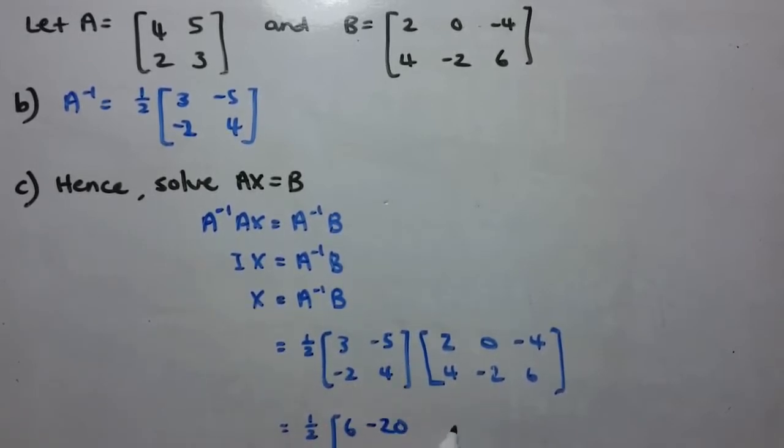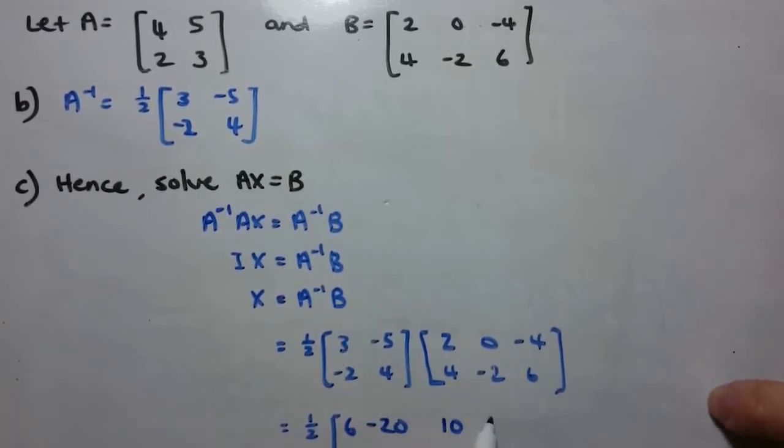First row second column for this one here, 3 times 0 is 0, negative 5 times negative 2 is 10. First row third column over here, 3 times negative 4 is negative 12. Negative 5 times 6 is take 30.